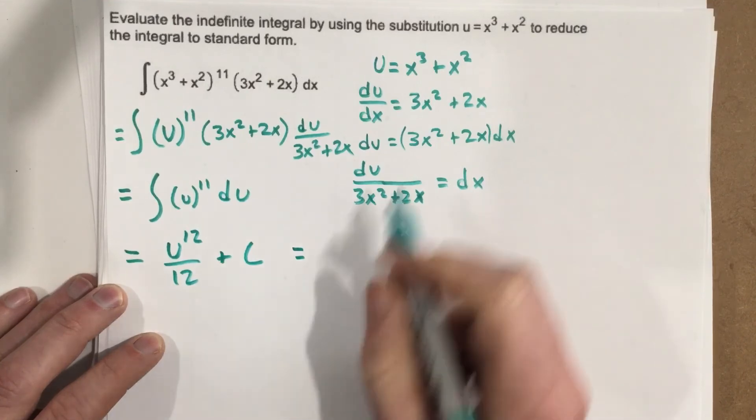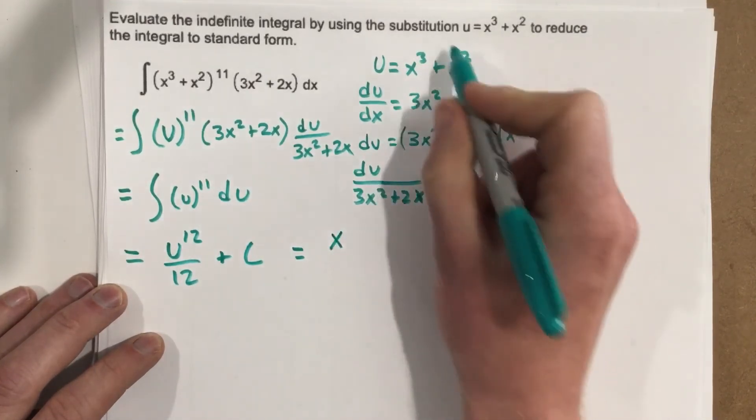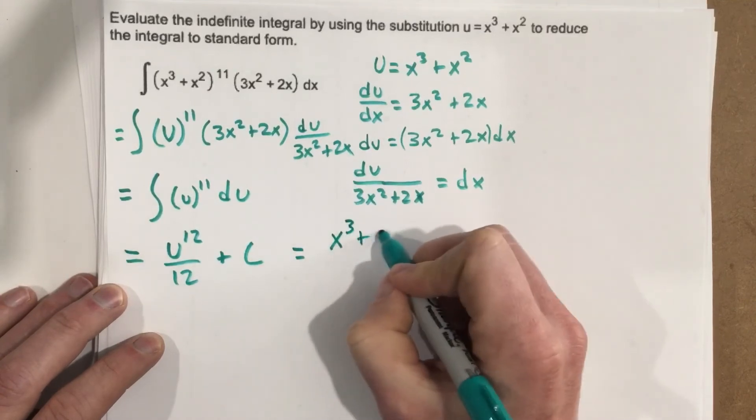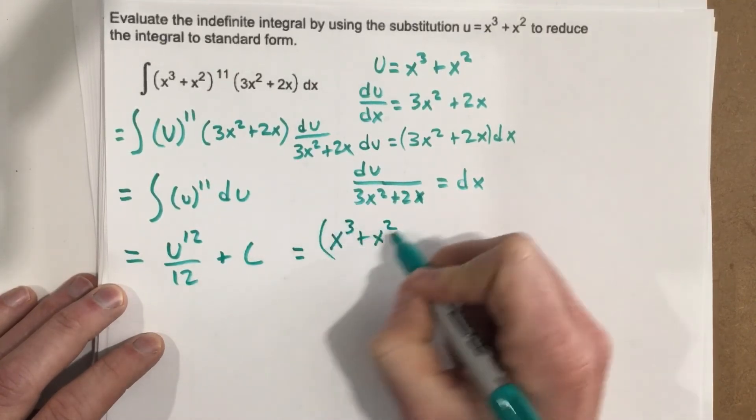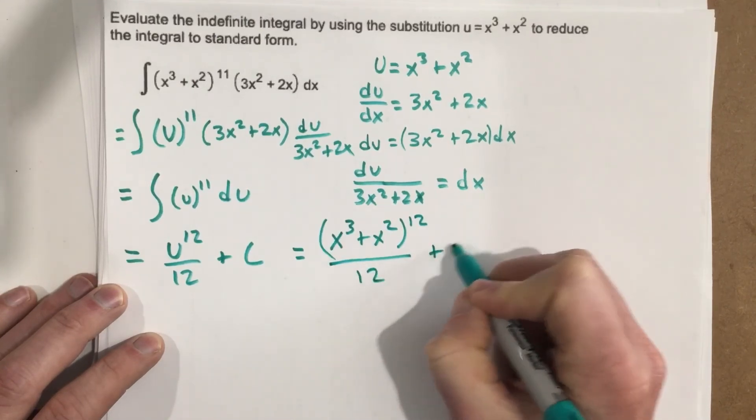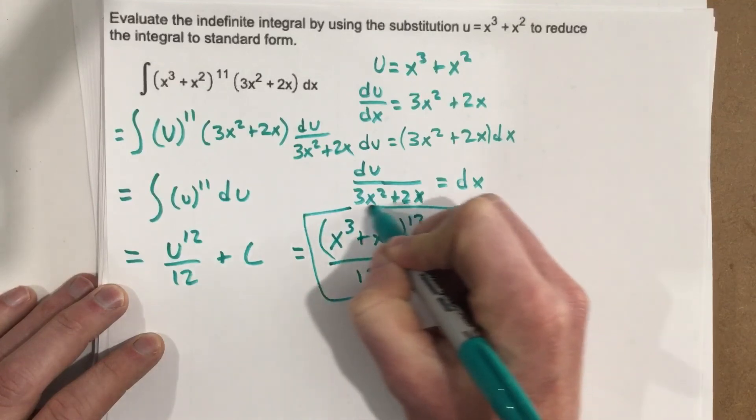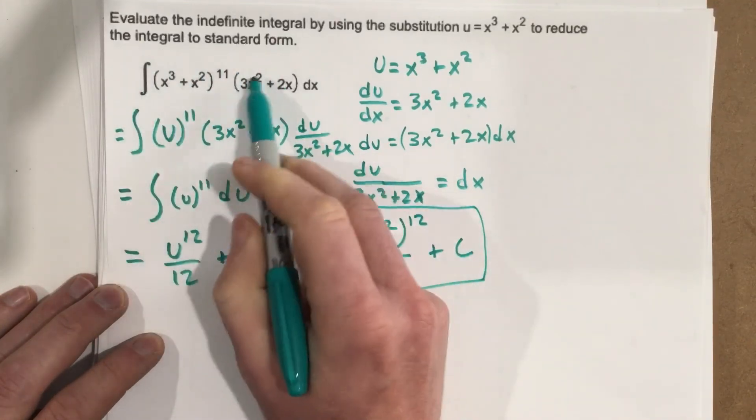Last step is to plug in our u variable. So we have our u expression, x cubed plus x squared to the 12th over 12 plus c. And that's the integration for this function here using u substitution.